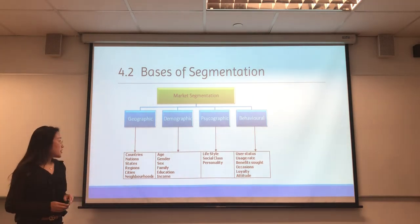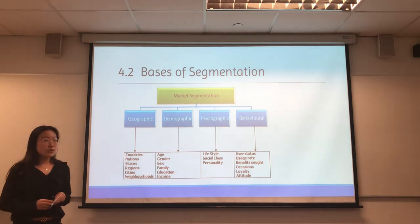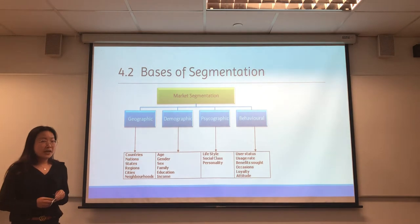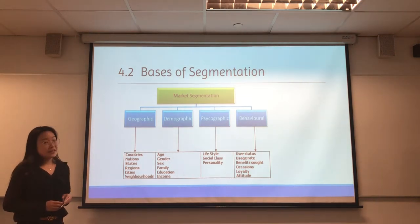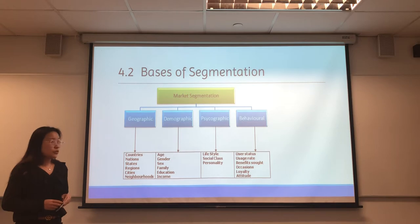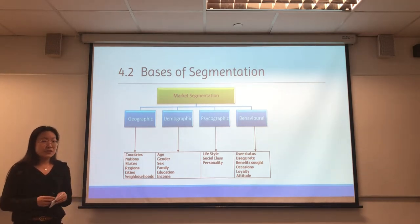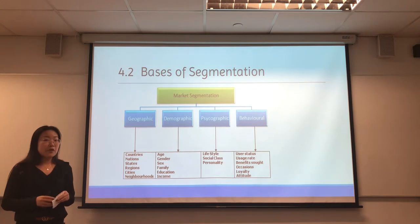For demographic segmentation, markets are divided based on demographic units such as age, gender, sex, family, education, and income. Customer needs and wants may change with age, so some companies use different segmentation approaches for different age groups — for example, McDonald's targets teenagers, children, seniors, and elders with different advertisements. Coming back to the scenario, for real estate, new developments always attract young families or young people. For psychographic segmentation, the market is divided into groups based on lifestyle, social class, and personality.